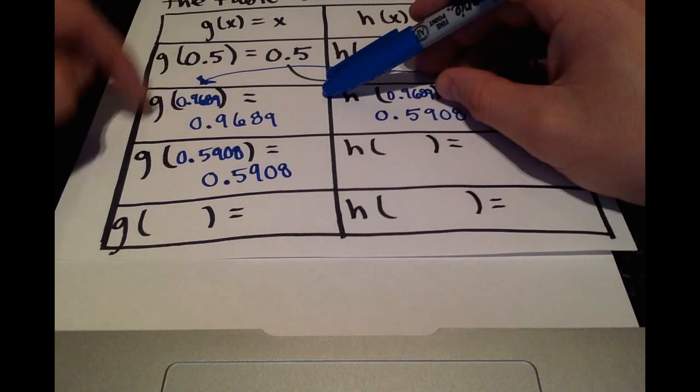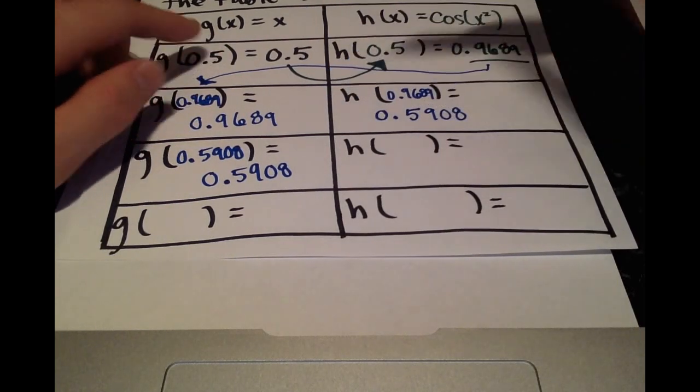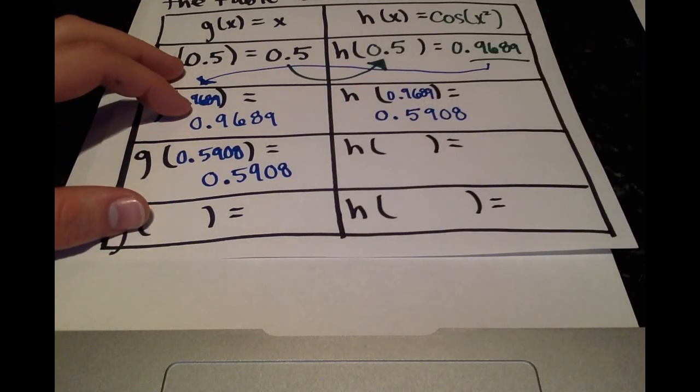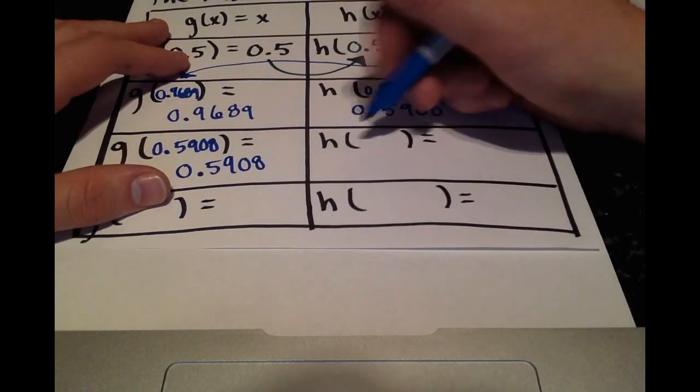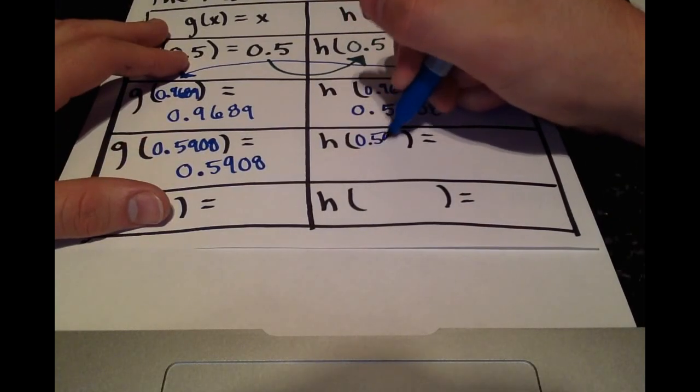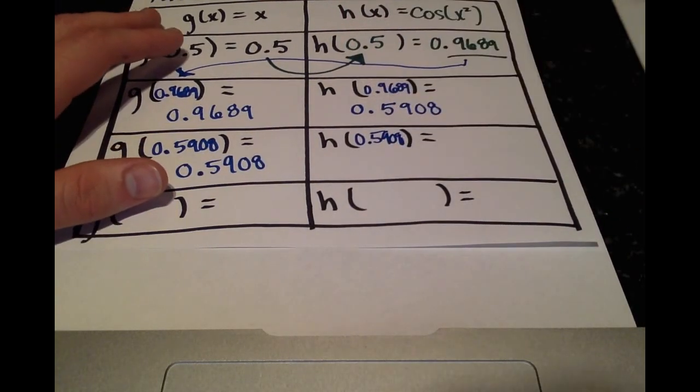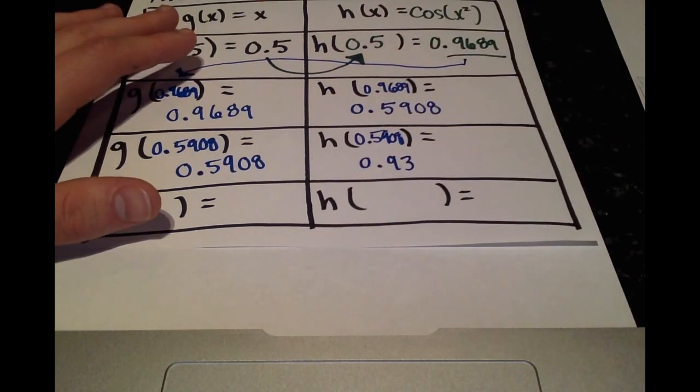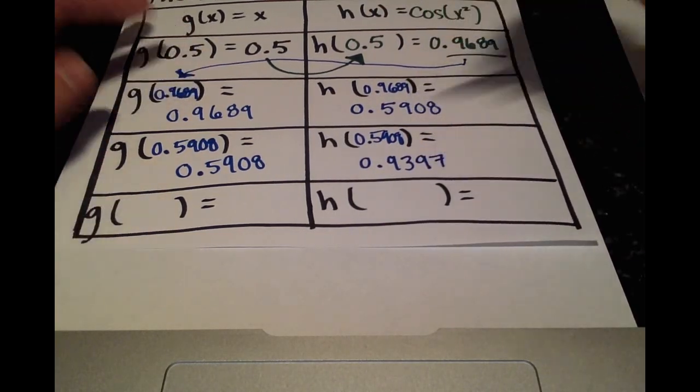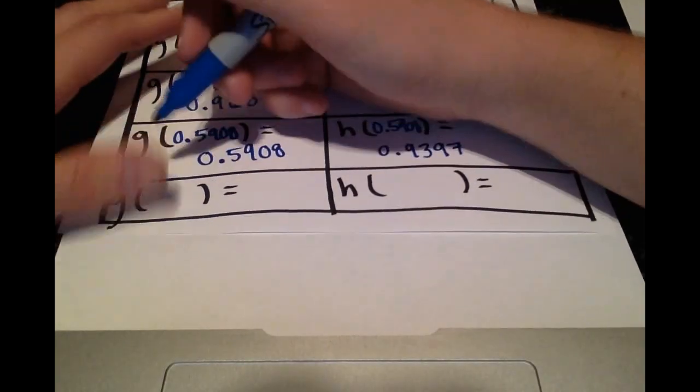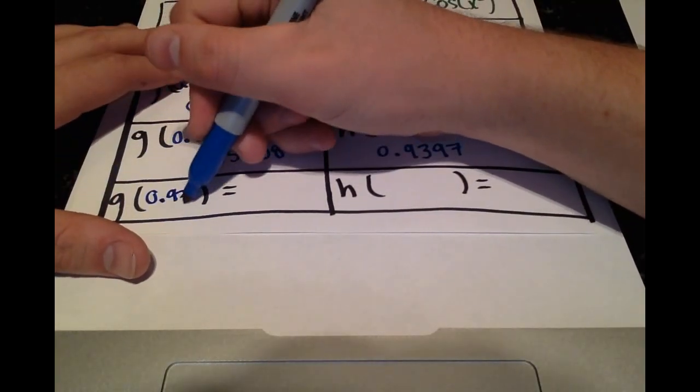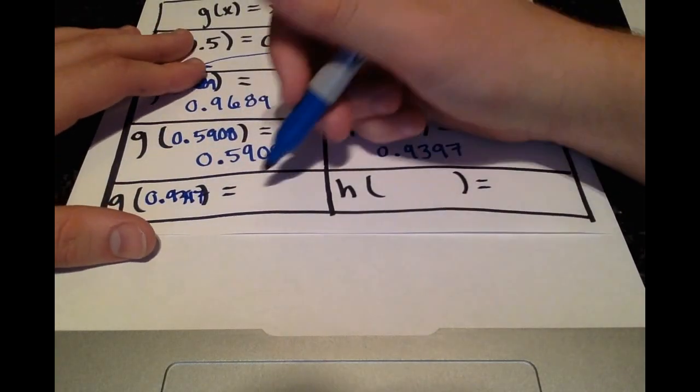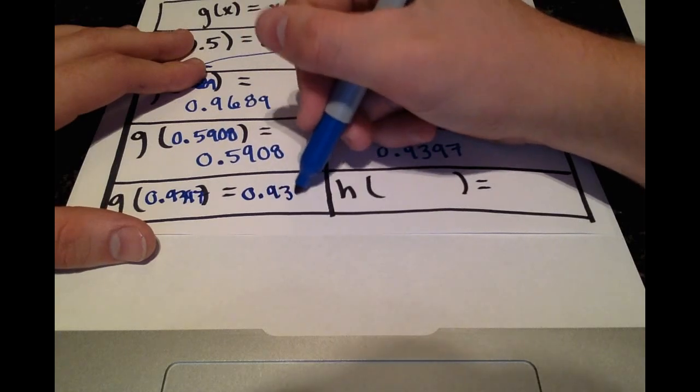Just automatically think the input will always equal the output when g of x equals x. So moving on, h of 0.5908 will equal 0.9397, g of 0.9397 will equal 0.9397.